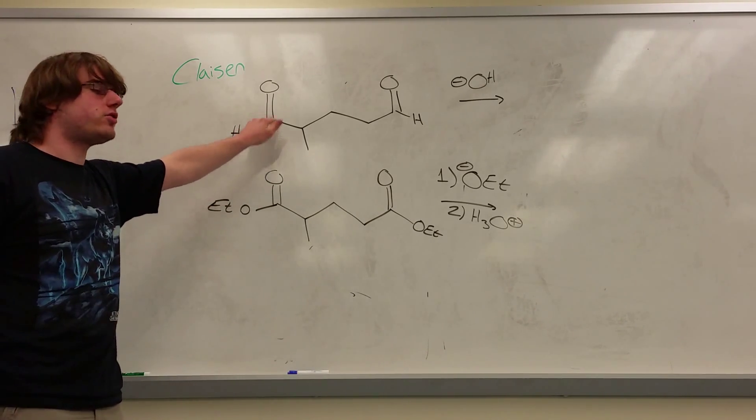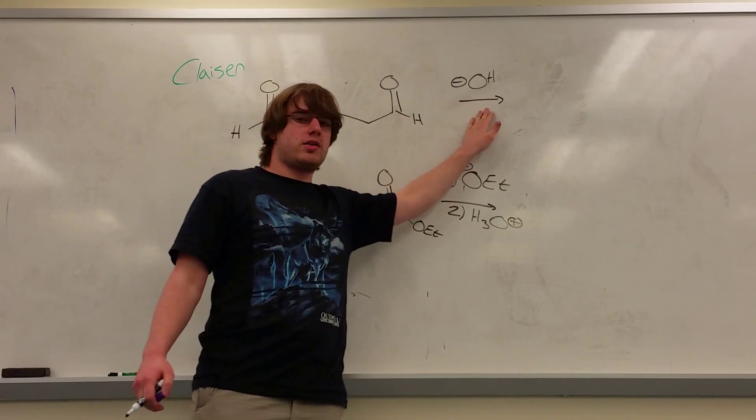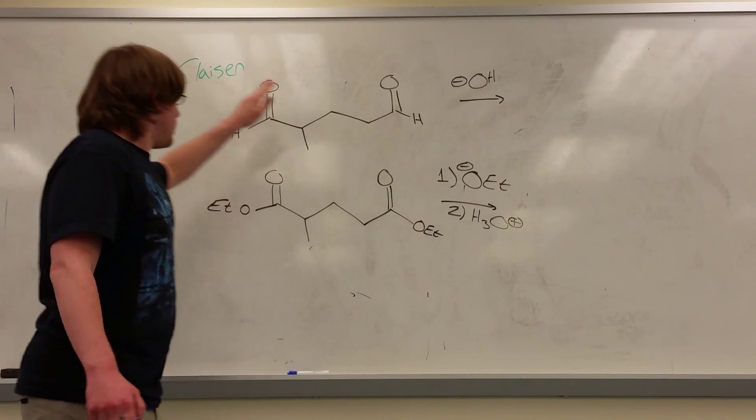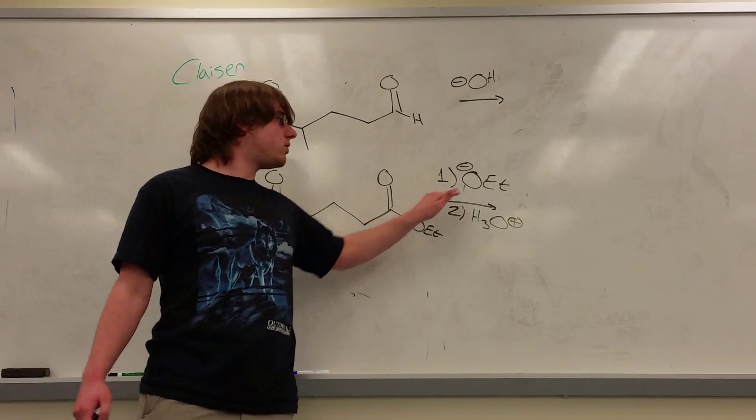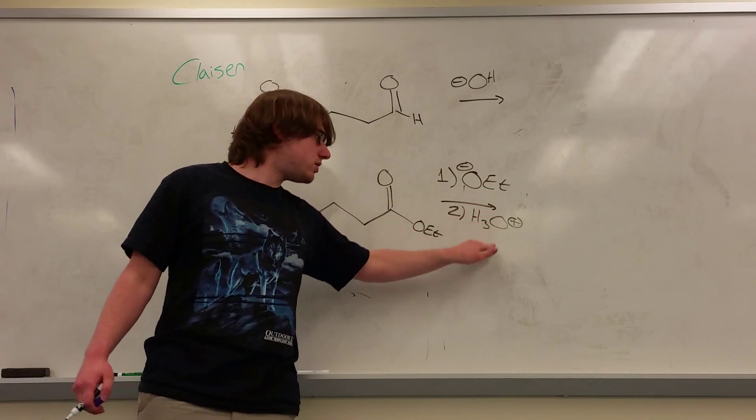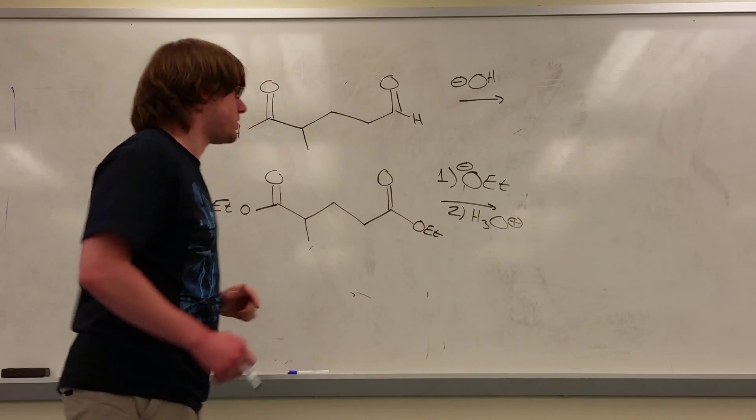Aldols involve just carbonyls or aldehydes with OH- as your base. Clasins involve two esters and an OET minus followed by an H plus step.